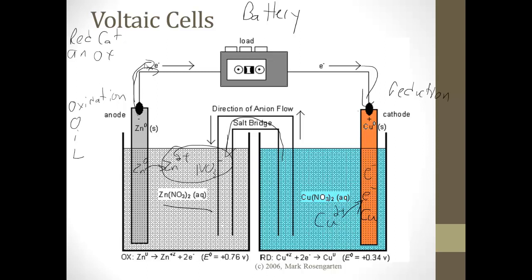Quick review: Red Cat and An Ox. Reduction is at the cathode. Oxidation is at the anode. Oxidation is losing, so electrons move away from the anode.